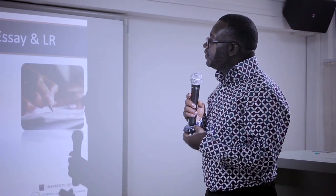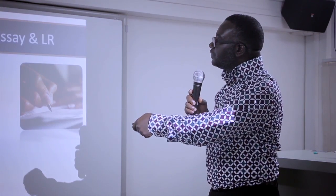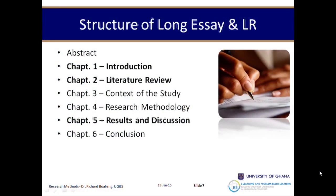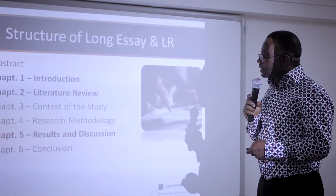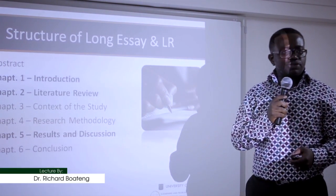A literature review plays a key role in the structure of a long essay. Some universities have a generic structure: abstract, introduction, literature review, context of study, research methodology, results and discussion, and conclusion. Chapters one, two, and five play a very key role in your long essay. All of these chapters require a lot of literature to substantiate your arguments. Chapter one needs literature to show what gaps exist and what you need to do. Chapter two needs literature to discuss and explain the conceptual opinions of your topic area.